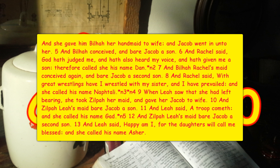Verse nine: when Leah saw that she had stopped bearing, she took Zilpah her maid and gave her to Jacob as a wife. So here comes the retaliation — Leah is going to give her maid to Jacob as well. Leah's maid Zilpah bore Jacob a son, and Leah said 'A troop comes,' so she called his name Gad, which means troop. Then Zilpah bore Jacob a second son and Leah said, 'I am happy, for the daughters will call me blessed,' so she called his name Asher, which means happy. It's interesting — these are the names the moms called their sons.